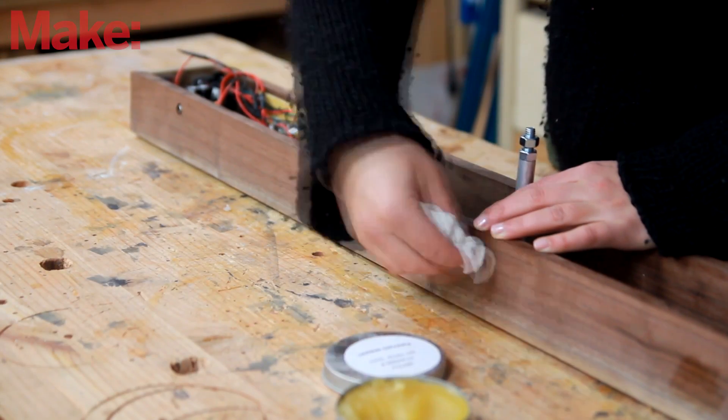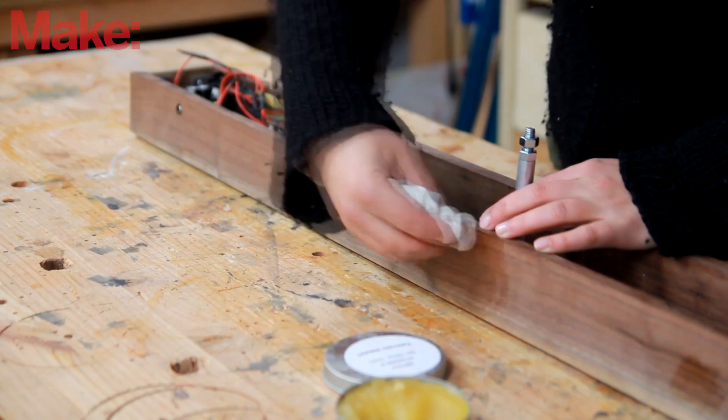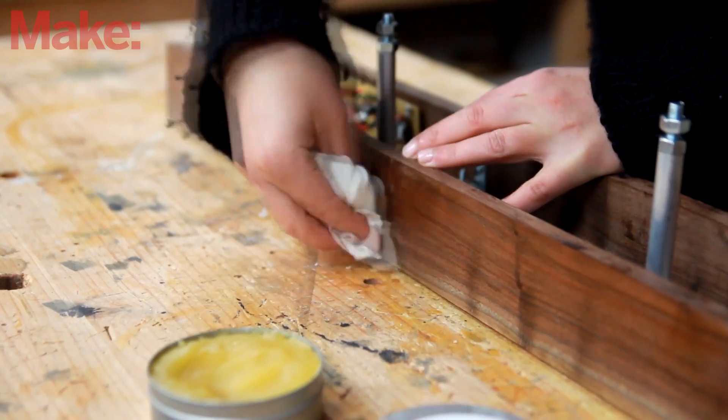To finish the wood I decided to simply go with tung oil polish that I make. And this is just to bring out the color of the wood.